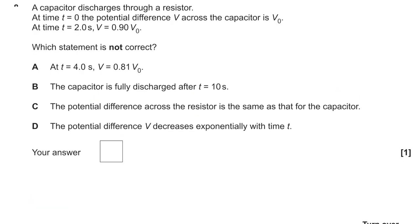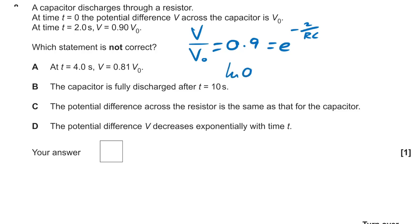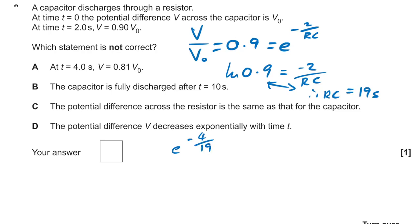Question eight: charging a capacitor. After 2 seconds, voltage is 0.9 of its original value. Taking logs: ln(0.9) = −2/RC, so RC ≈ 19 seconds. At 4 seconds, V = e^(−4/19) = 0.81, so A is correct. B is wrong — the capacitor never fully discharges because it decreases exponentially and technically never reaches zero.